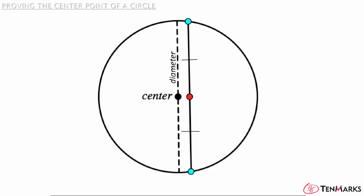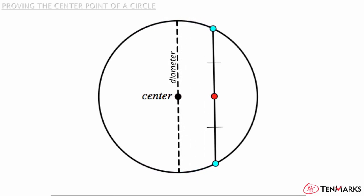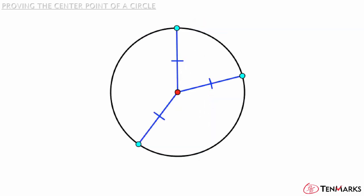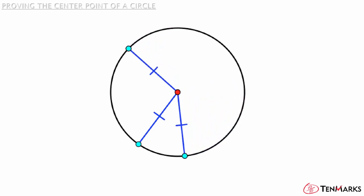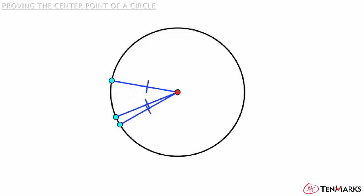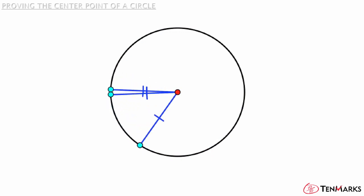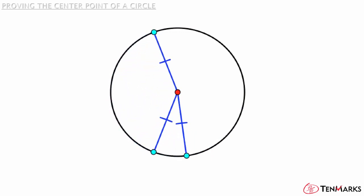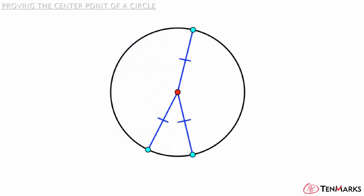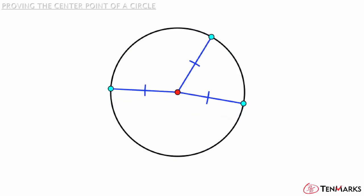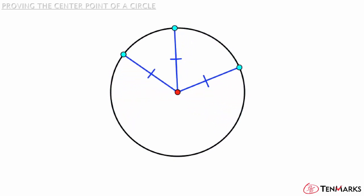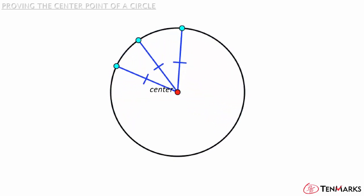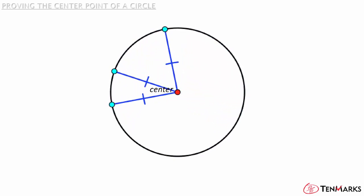What about a point that's equidistant from three points on the circle? Here is a point in red that is equidistant from three points on the circle. Notice that the placement of the three points does not make a difference. The point inside the circle that is equidistant to all three points is always constant. This point is, in fact, the center of the circle.